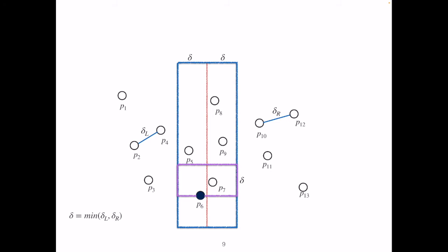We see that we can only have six points at most in each of the purple boxes. Therefore, we consider all the points in the blue rectangle and check one point at a time from the bottom to the top.